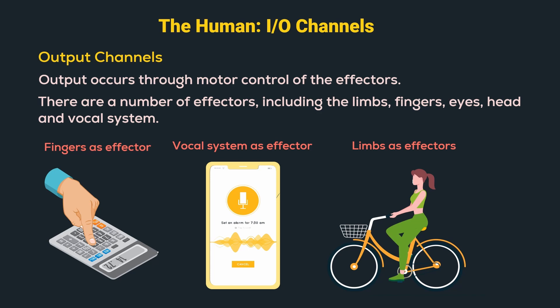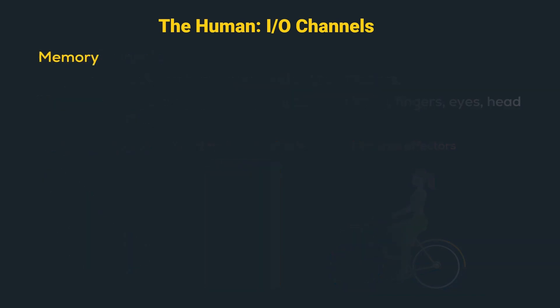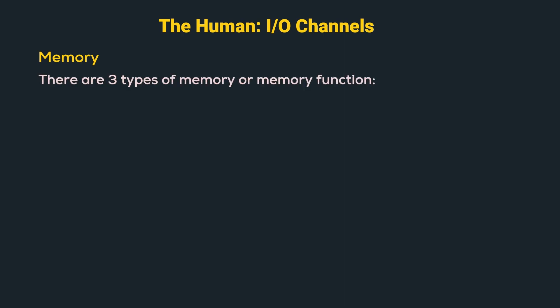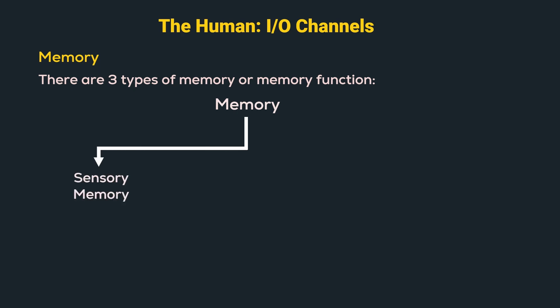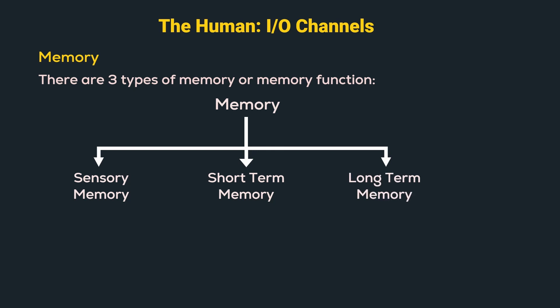What comes between in these interactions is storing the information in memory and processing it to rationalize and act. So let us understand memory briefly. There are three types of memory or memory functions. The first is sensory memory, which acts as a buffer for stimuli received through our senses. The next is short-term memory or working memory, which acts as a scratch pad for temporary recall of information. And the last is long-term memory, where we store all factual information and experimental knowledge.